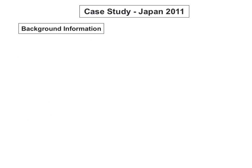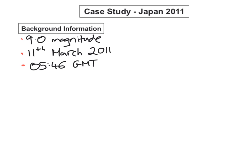We're going to look at a case study for earthquakes: Japan, 2011. Some background information: Japan had a massive earthquake which reached 9.1 on the Richter scale. It happened on the 11th of March 2011 at quarter to six in the morning. The earthquake happened just off the coast of Japan, 130 kilometers off the east coast. Because it was such a huge earthquake in the ocean, it created a tsunami. The earthquake itself lasted for six minutes.